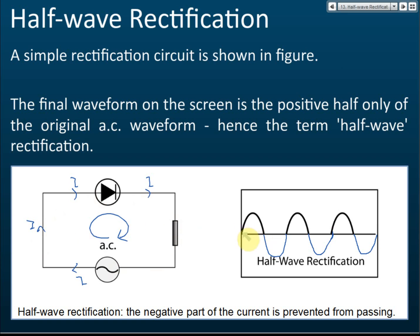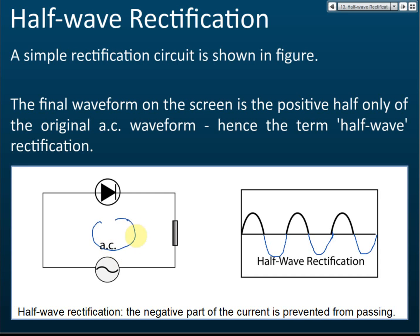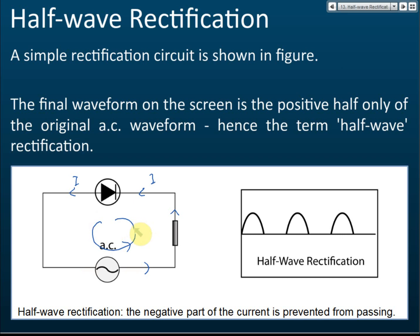When the current flows counterclockwise, the direction of the current is opposite to the direction of the arrow inside the diode — this is reverse bias. Reverse bias means no current can flow. So if the current tries to move counterclockwise, reverse bias occurs and no current flows. Current can only flow clockwise; no current can flow counterclockwise.